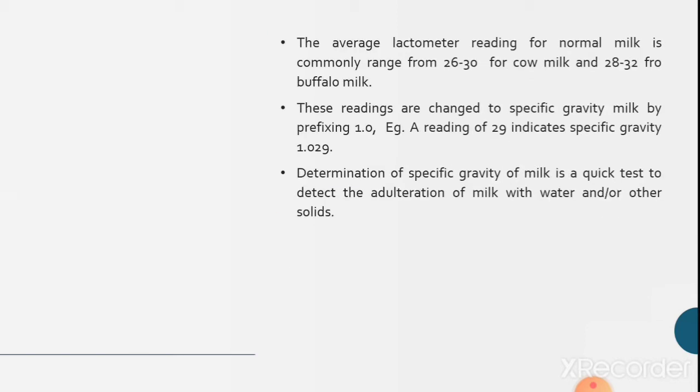The average lactometer reading for normal milk commonly ranges from 26 to 30 for cow milk and 28 to 32 for buffalo milk. These readings are changed to specific gravity of milk by prefixing 1.0. For example, reading of 29 indicates specific gravity of 1.029.